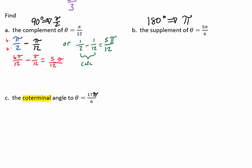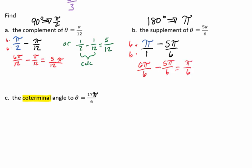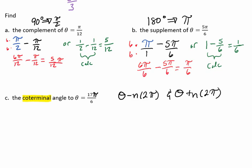Now to find the supplement of theta, remember that a supplement is two angles that add to 180 degrees. In radians, we take pi and subtract 5 pi over 6. So we have pi over 1 minus 5 pi over 6. To subtract these, we need common denominators, so we multiply by 6, giving us 6 pi over 6 minus 5 pi over 6, which comes out to pi over 6. We can also compute this by taking 1 minus 5 over 6 on the calculator, which gives 1 over 6, then put the pi back — pi over 6.